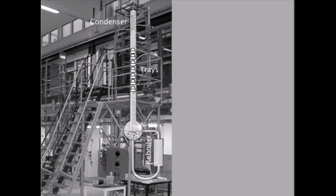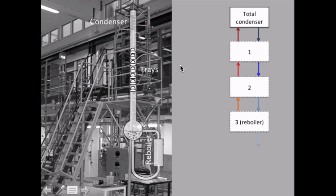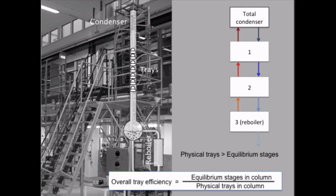What about physical trays? We have a number of physical trays, and we represent them with a number of equilibrium stages. But the trays can never be 100% efficient, so the physical trays always outnumber the equilibrium stages. To calculate the overall tray efficiency, we simply divide the equilibrium stages inside the column by the physical trays inside the column.